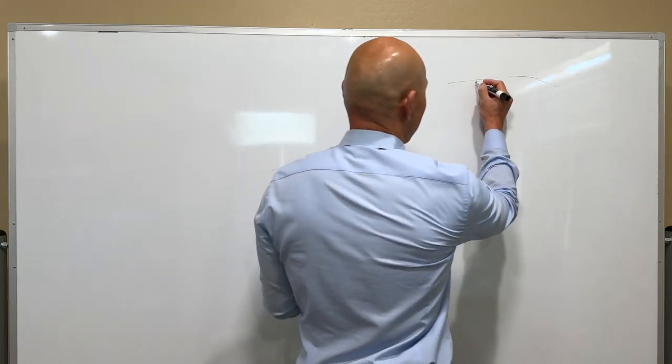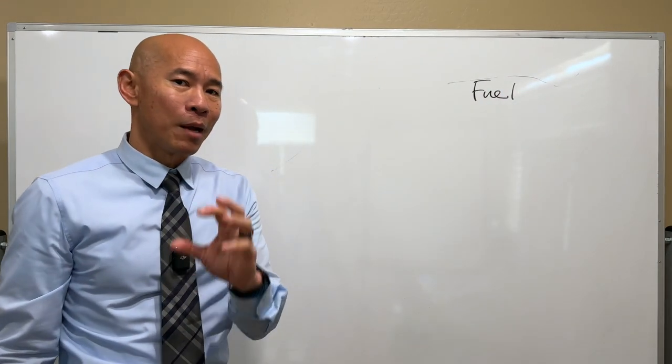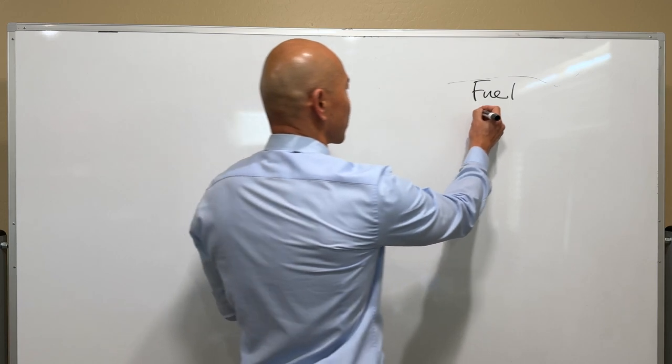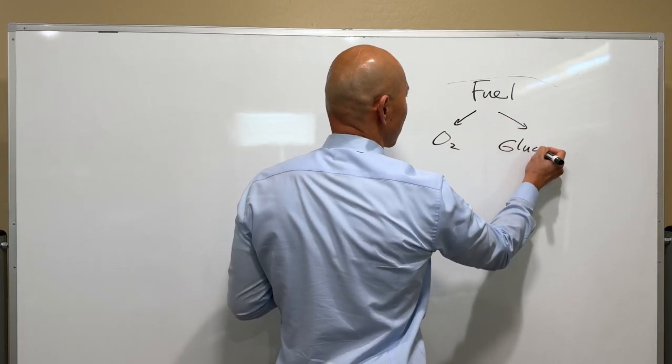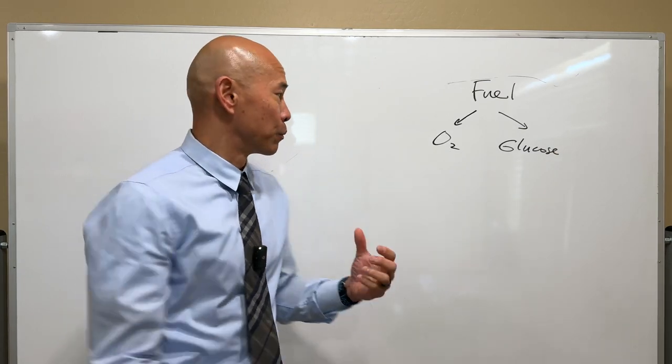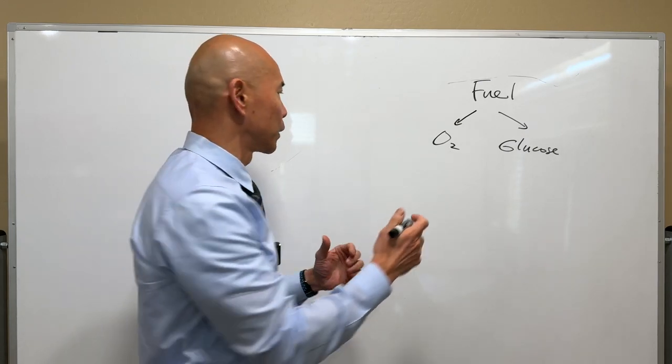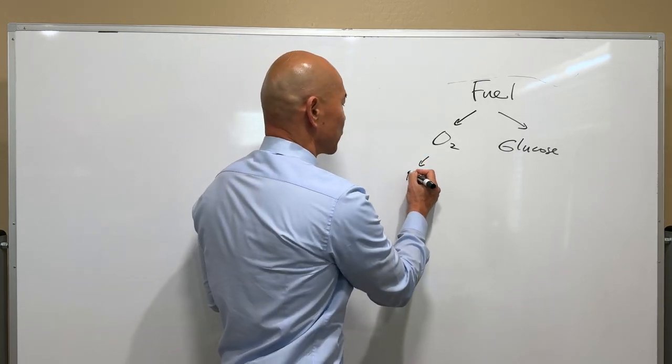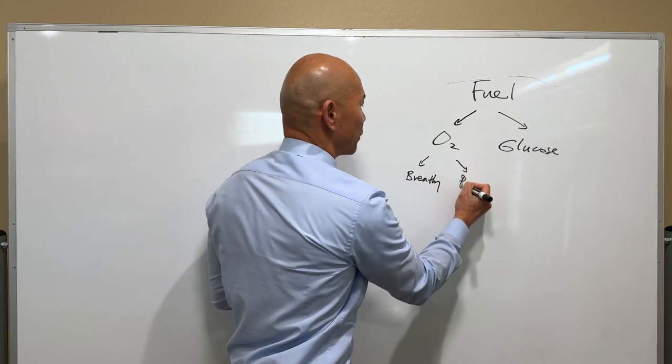The first thing that neurons need is fuel. And the primary source of fuel for neurons comes in the form of oxygen and glucose. Now, oxygen comes from the air that you breathe, but also comes from the ability to deliver that oxygen in your blood to your tissue. So this is going to be breathing and perfusion.